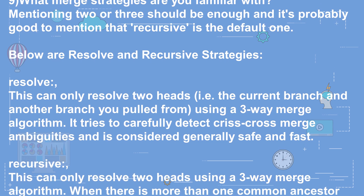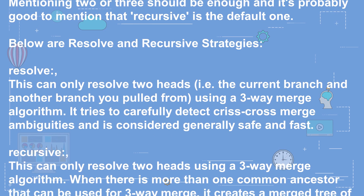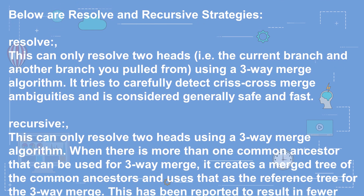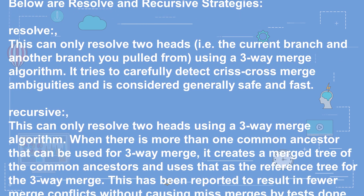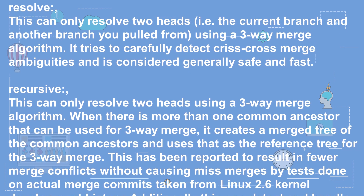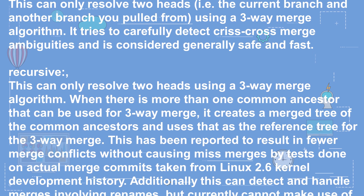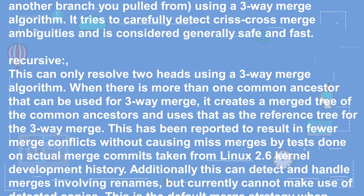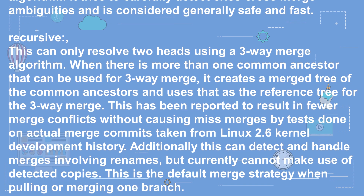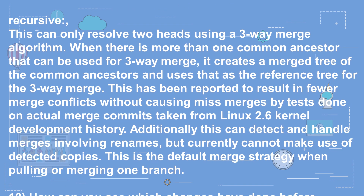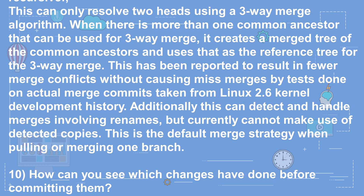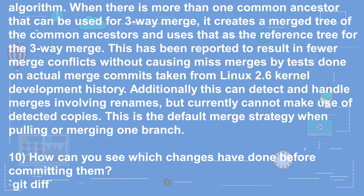Recursive — this can only resolve two heads using a three-way merge algorithm. When there is more than one common ancestor that can be used for the three-way merge, it creates a merged tree of the common ancestors and uses that as the reference tree. This results in fewer merge conflicts and can detect and handle merges involving renames. It is the default merge strategy when pulling or merging one branch.